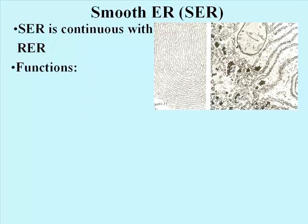Here are some TEMs of smooth endoplasmic reticulum. Like rough endoplasmic reticulum, SER can appear differently in cells. In the TEM on the left, we see a whorl of SER. On the right, the SER is less organized, and can be seen to be continuous with rough endoplasmic reticulum. This raises a fascinating question of what defines the border between these two functionally different regions of the same, or at least similar, membrane.